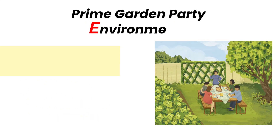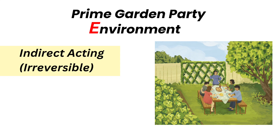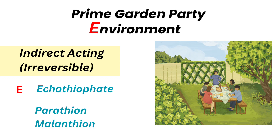The environment includes the irreversible agent: E for echothiophate. Echothiophate is an organophosphate. Other irreversible drugs include parathion and malathion.